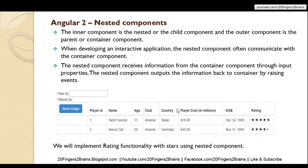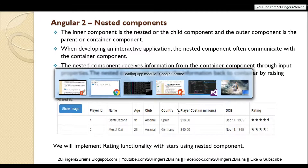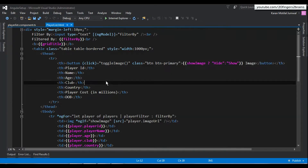We have a grid already implemented up to the date of birth column. The next column is the rating column, and we are going to implement this as a part of the nested component demo. Let's start by going to our application, which is the same project used in all previous videos.